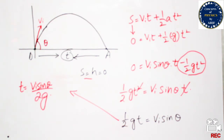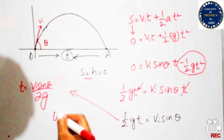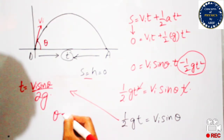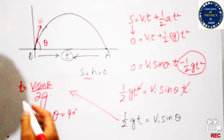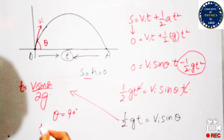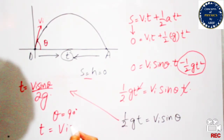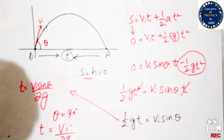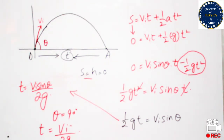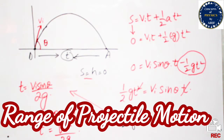In this case, we can also find out the maximum time. The maximum time occurs when theta is equal to 90 degrees — we get maximum time T = Vi / g times 2, giving T_max = 2Vi / g. Next, we will find out the range of projectile motion.